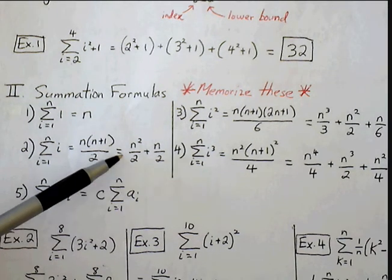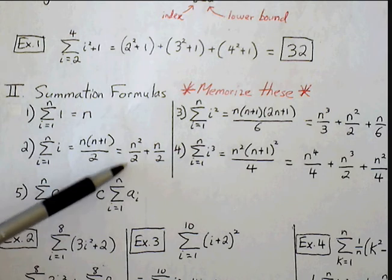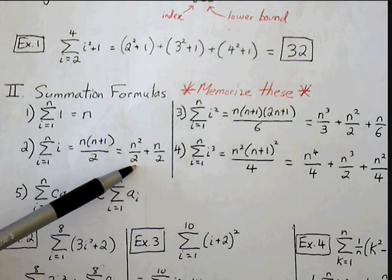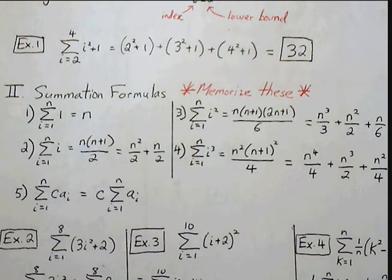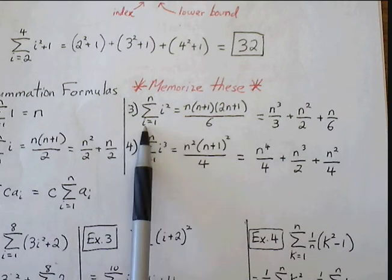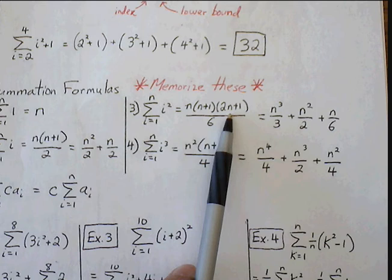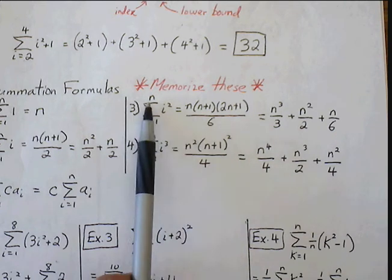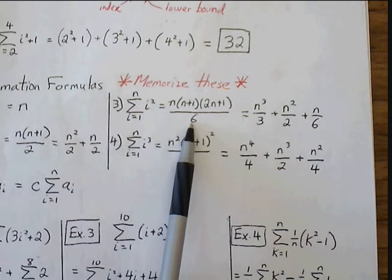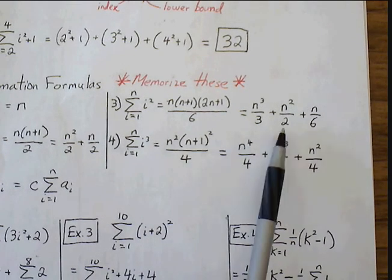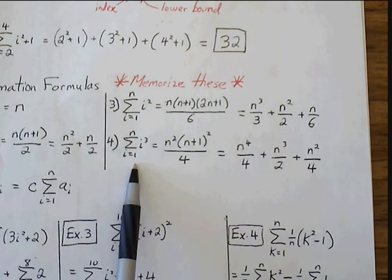This isn't exactly necessary, but knowing these values as separate fractions will make things easier when finding the exact area under the curve. The third rule: the summation from 1 to n for i squared equals n times n plus 1 times 2n plus 1 divided by 6. If we foil this out as separate fractions, it's n cubed over 3 plus n squared over 2 plus n over 6.